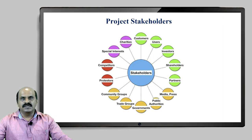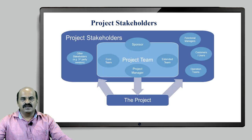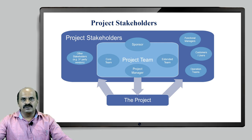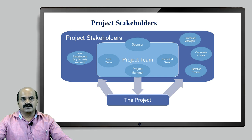It is very important to understand first what the various project stakeholders are and what their requirements are. In this particular image, stakeholders have been divided into categories like sponsors, who are the promoters of the project, then there is a team which works on the project led by the project manager, and there may be some third-party vendors supplying services, materials, or other facilities to the main project team.